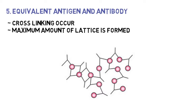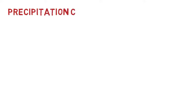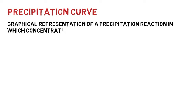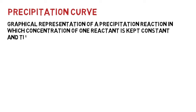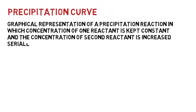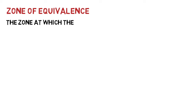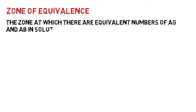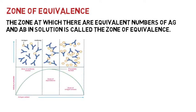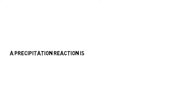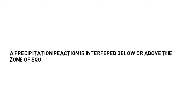As we have learned about antigen-antibody complex formation and precipitation reaction, we can now understand the precipitation curve. The precipitation curve is a graphical representation of the precipitation reaction in which the concentration of one reactant is kept constant and the concentration of the second reactant is increased serially. The precipitation curve is divided into three zones. The zone at which there are equivalent numbers of antigens and antibodies in solution is called the zone of equivalence, where the maximum amount of lattice is formed.